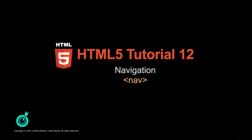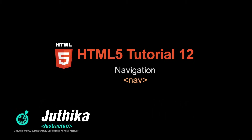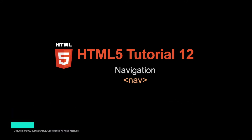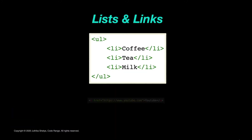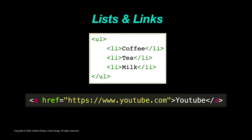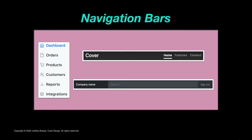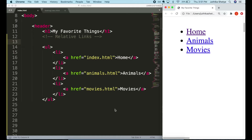Hey everyone, this is Juthika and welcome to your 12th HTML5 tutorial. Now that we know how to make lists and links, let's look at how we can combine them both to create a menu or a navigation bar. Let's say we want to make a main menu bar for our website, a section of links that we will use to navigate to other pages on our website.